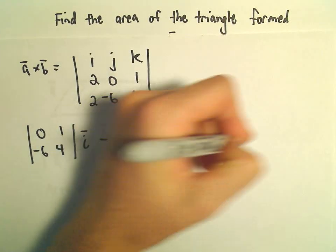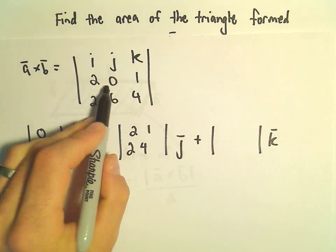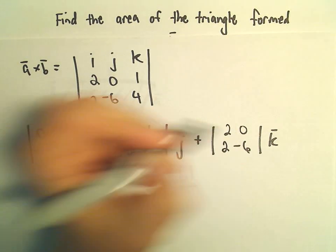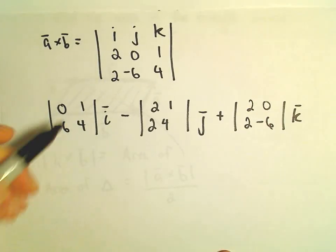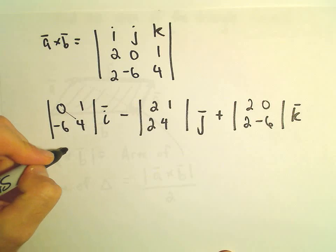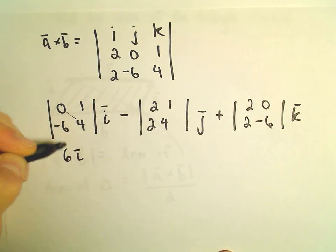And then we'll add to that our K component. So then we'll be left with 2, 0, 2, negative 6. So let's see, 0 minus negative 6. So that'll leave us with positive 6I.